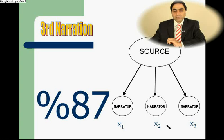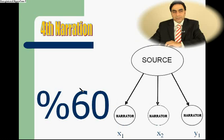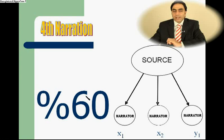In his third narration, there is another person X2 supporting him and a known person X3 also supporting him, so our narrator R gains eighty-seven percent of success. In his fourth narration, our narrator R comes with X2 supporting him while Y1 is denying him, so our narrator will gain sixty percent of success through this narration.